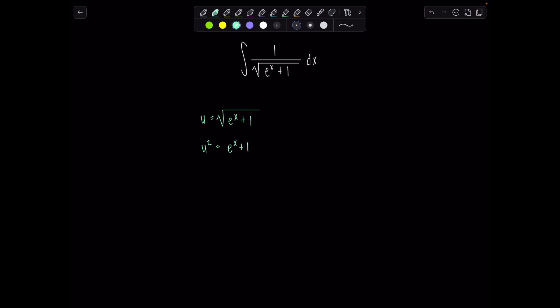And then now let me differentiate both sides. So on the left hand side, we'll have 2u du, and then that equals e to the x dx.